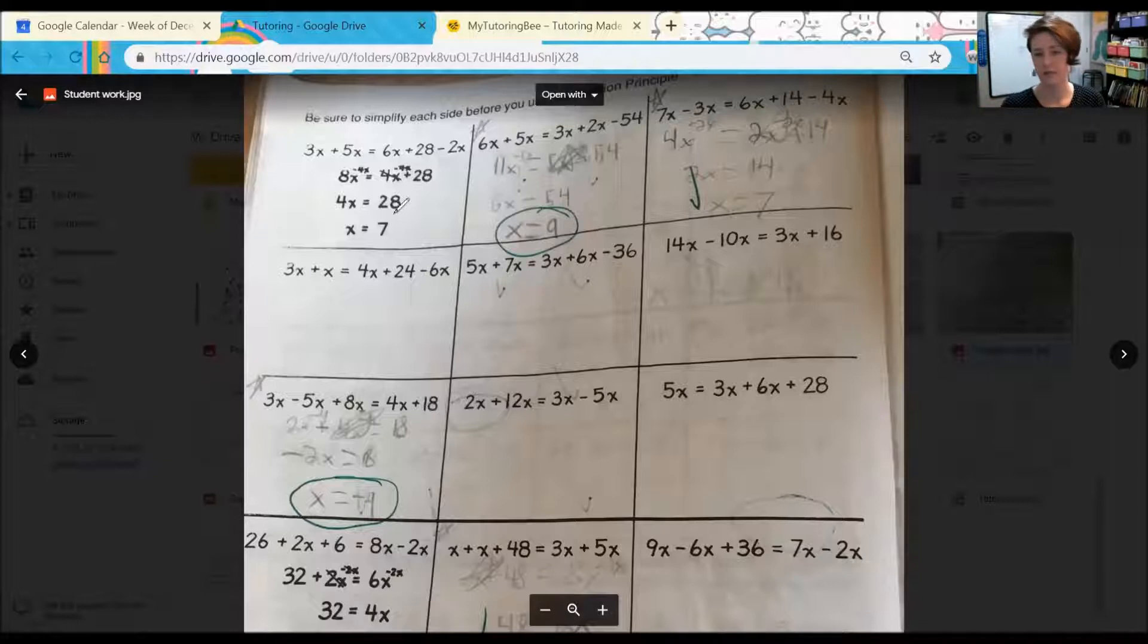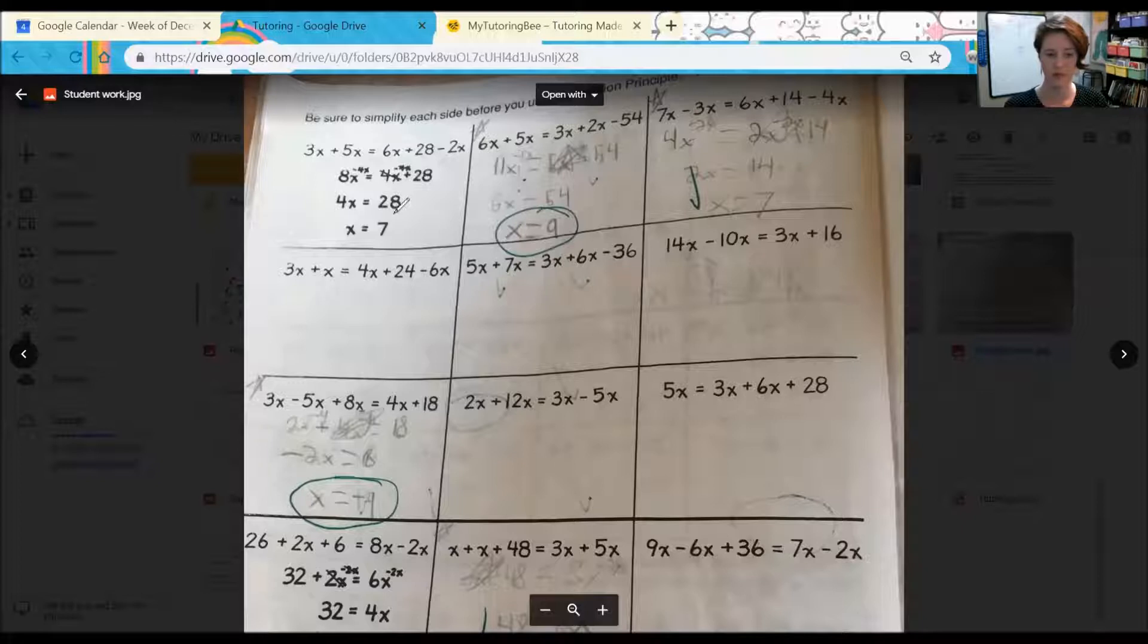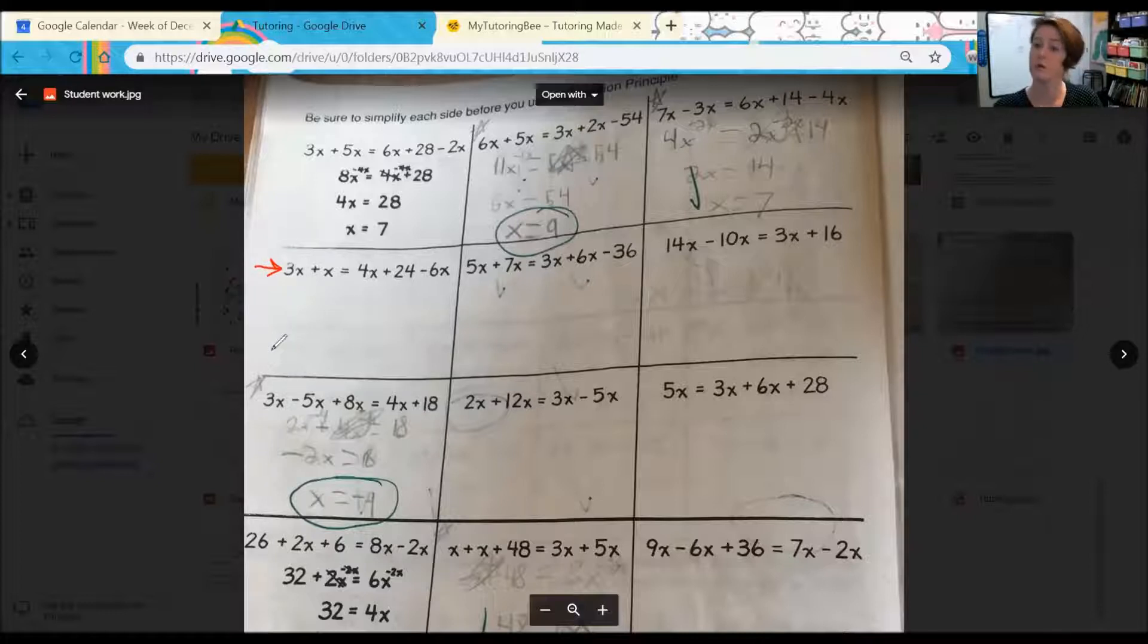And as soon as any of my students see that menu that comes up with all the different options that they have that they can draw on the board with, they know exactly what to do. So it's really just really easy and quick. So again, for example, if I was working on this page with one of my students, I'd be asking them, okay well let's take a look at this problem and what would our first step be?